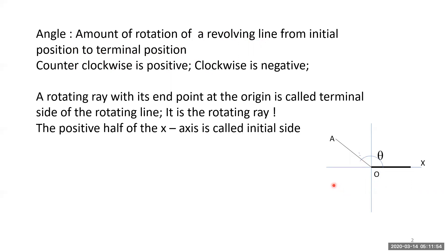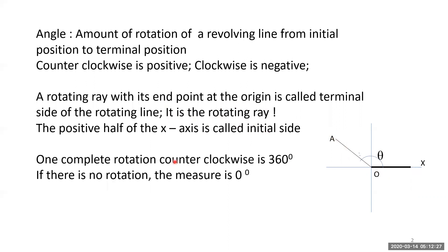A rotating ray with its endpoint at the origin is called the terminal side of a rotating line. Note that O is fixed — it is hinged — so OX can be rotated. The terminal ray can be extended to any length up to infinity. The positive direction of the x-axis is called the initial side, and the other side is called the terminal side.